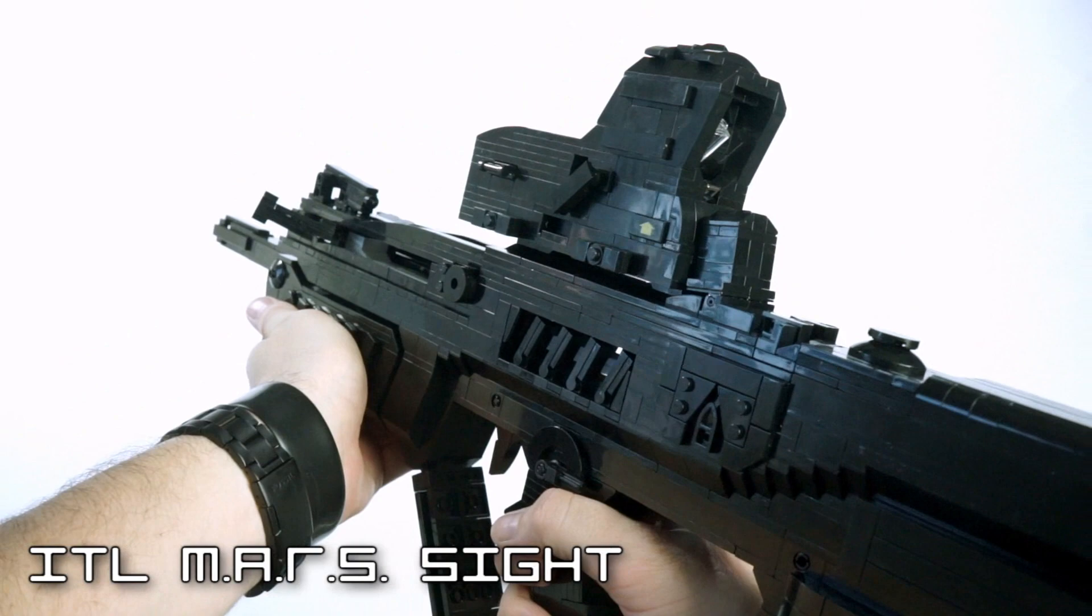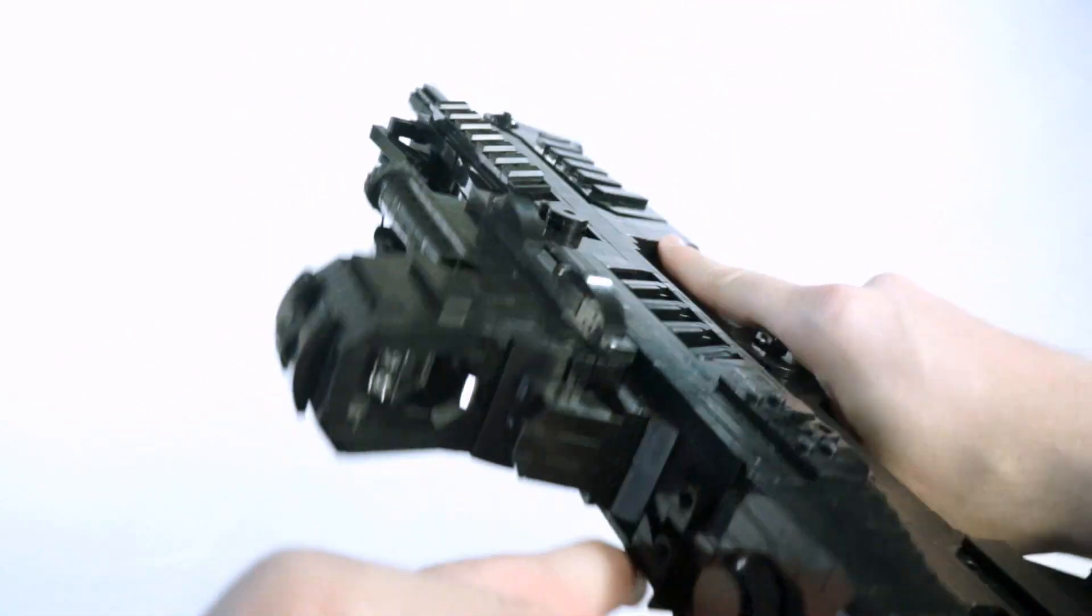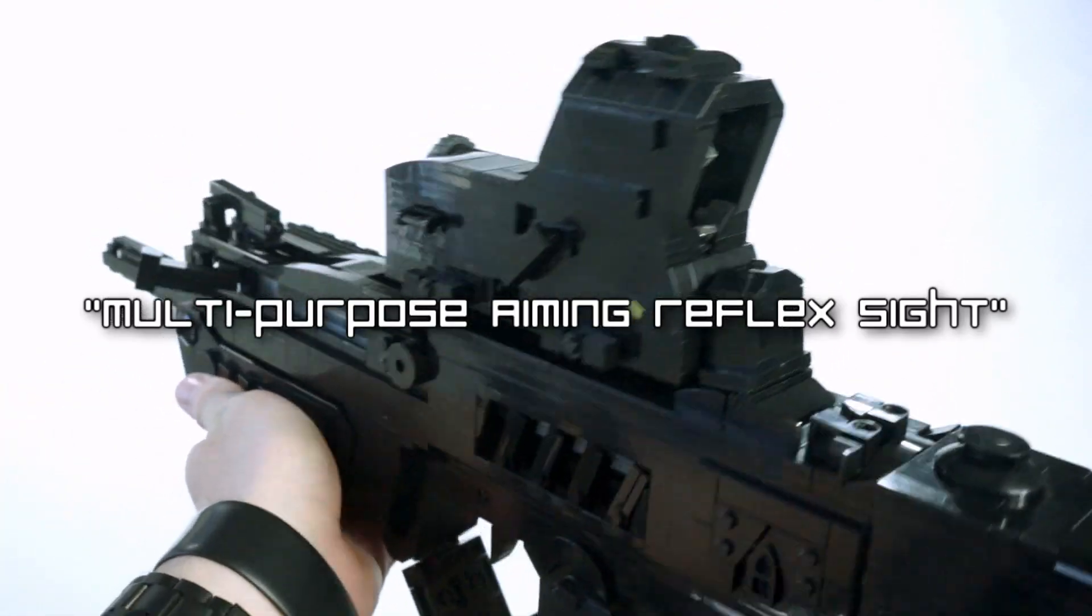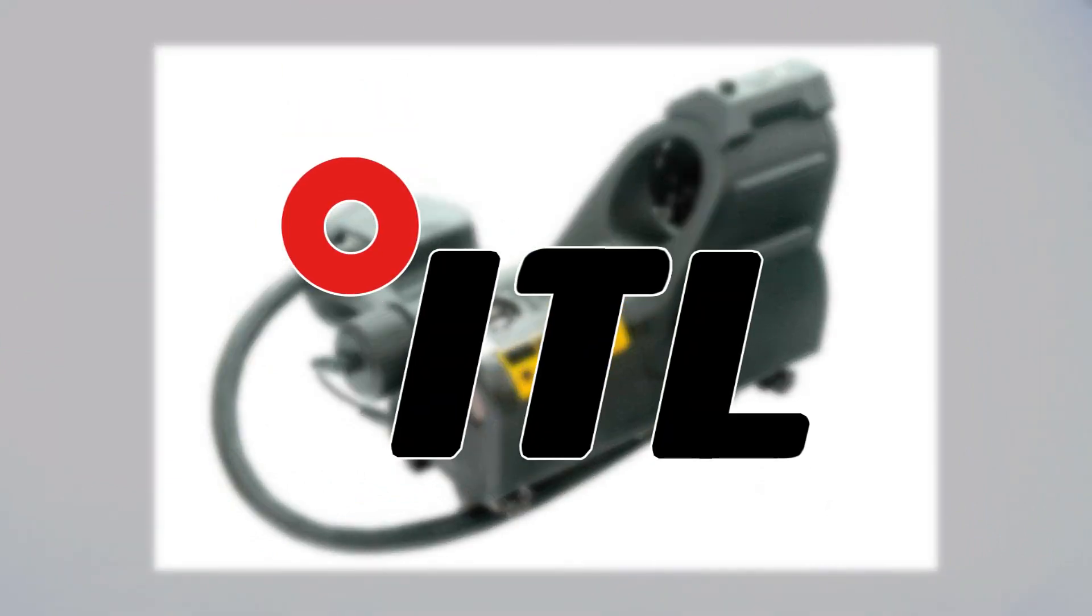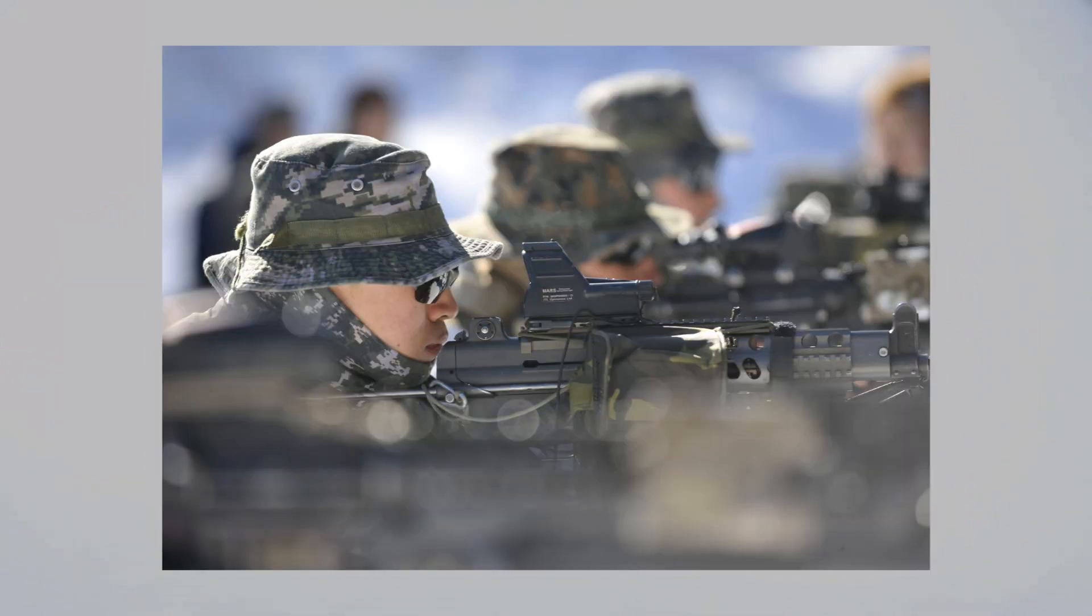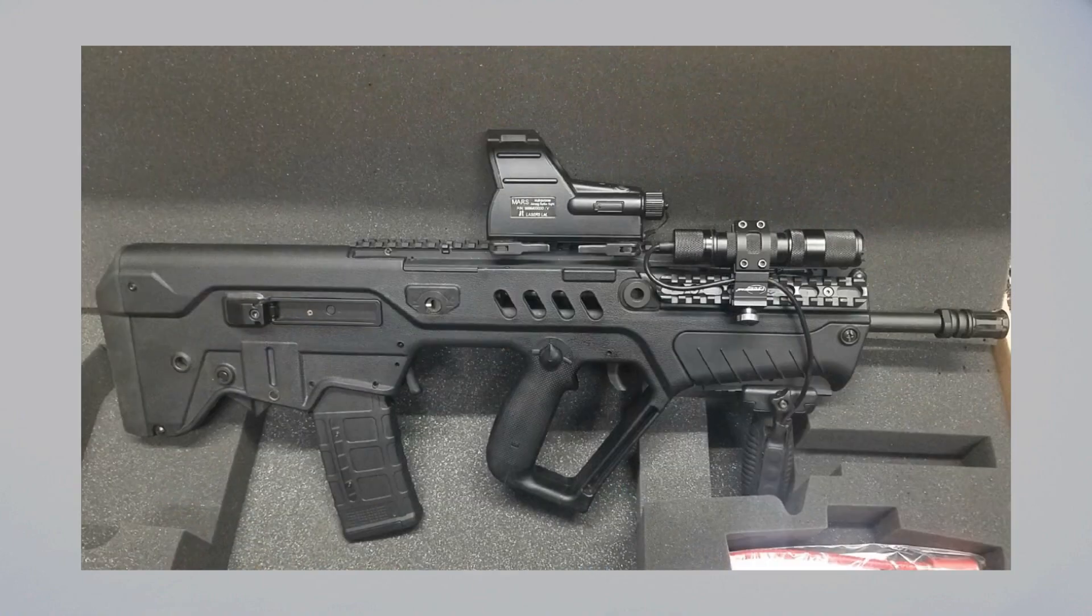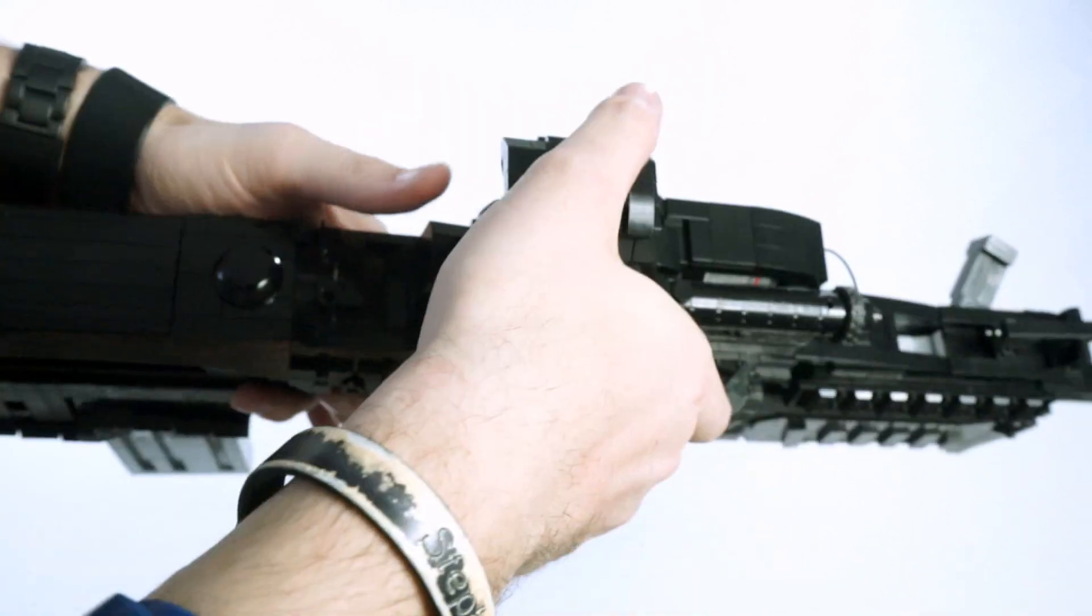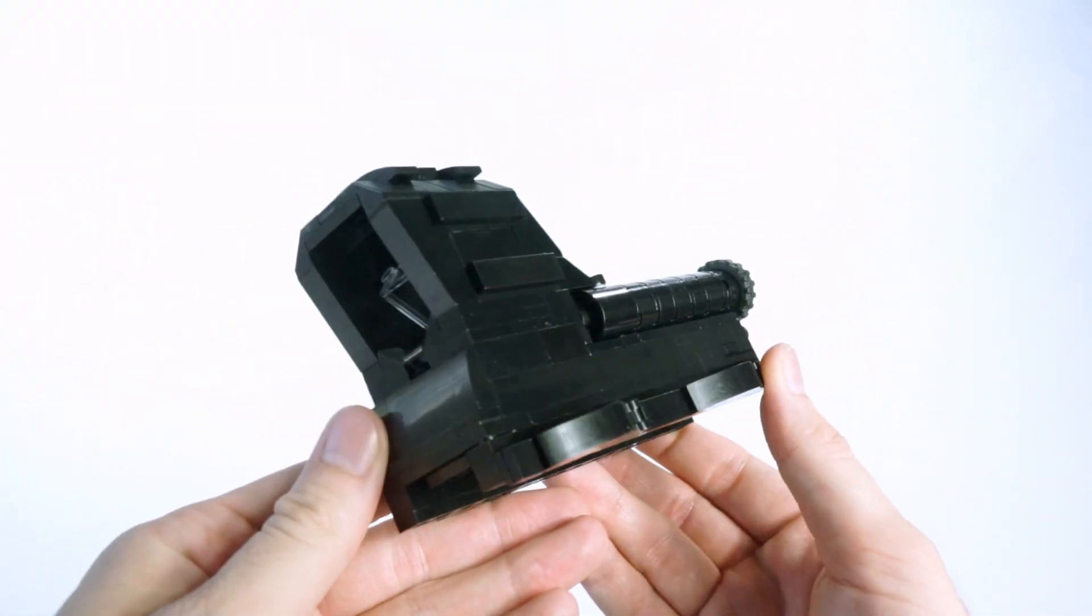Right here we have the LEGO Mars sight for the Tavor. The Mars sight, or what's also known as the multi-purpose aiming reflex sight, is the reflex sight being produced by ITL Optronics based out in Israel, and they've worked alongside with IWI to help make their revolutionary sight for the upcoming Tavor model. This sight right here was pretty tricky to make because of the fact that it just has a lot of things going for it.